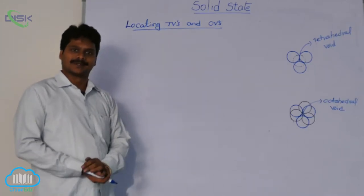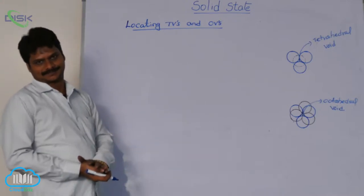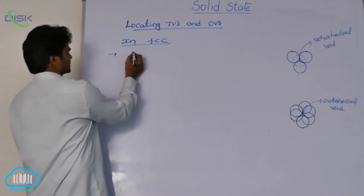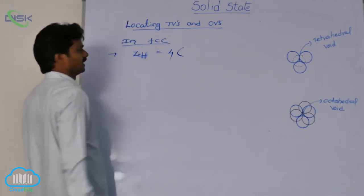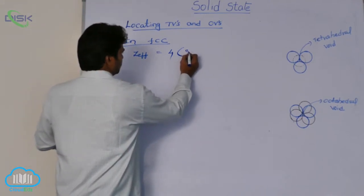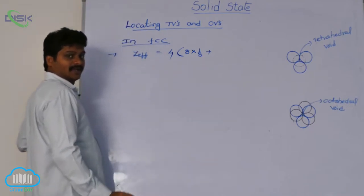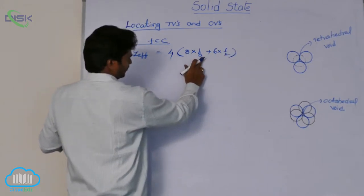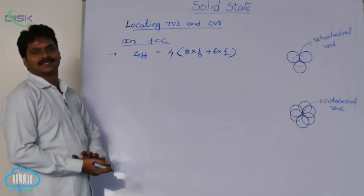Where are the tetrahedral and octahedral voids present in the cubic system? Let us discuss the FCC system. In FCC, the number of effective atoms equals 4. Atoms are present at 8 corners, so 8 × 1/8, plus atoms at the 6 face centers, so 6 × 1/2. That gives 1 + 3 = 4. So the number of effective atoms in FCC is 4.